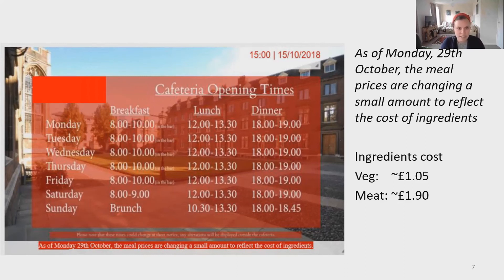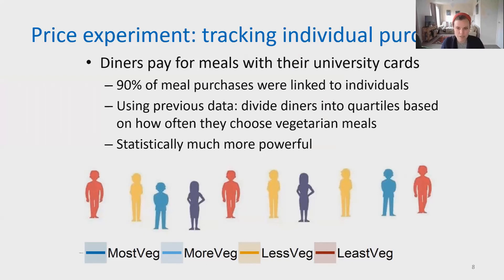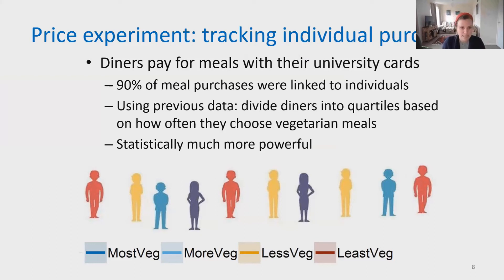We found that vegetarian ingredients cost approximately £1.05 and meat ingredients approximately £1.90. The 20p increase and decrease was chosen so that during the intervention both the meat and vegetarian options had a similar ATP difference between ingredient cost and customer price, instead of vegetarian options essentially costing more out of pocket relative to ingredient cost. We were able to track purchases from specific individuals as catering managers shared that data — 90% of meal purchases could be linked to individuals. We used data from a previous term to divide diners into quartiles based on how often they chose vegetarian meals, which made our statistics considerably more powerful.